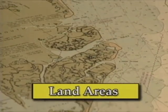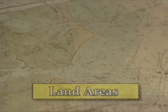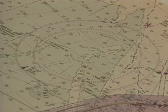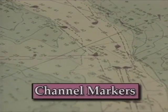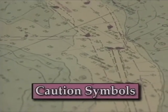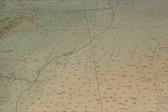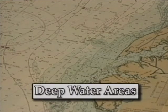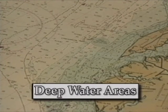Yellow or a gold tint is used to depict land areas. Your chart will also contain markings in purple, which depict compass roses, channel markers and buoys, caution and danger symbols, and notes. White is considered to be the uncolored portion of a chart, showing deep water areas of three fathoms and over, or the preferred channel.